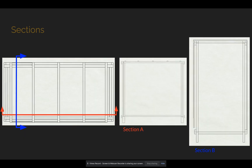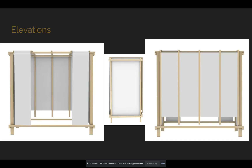Next are some section views I created. Red is section A and blue represents section B. Next are a few elevations that I created in rendering mode using Rhino.